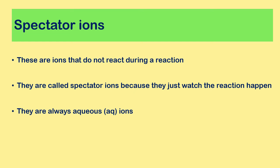Spectator ions are any ions that do not react during a chemical reaction. They are called spectator ions because they essentially just watch the reaction happening. Spectator ions are always aqueous.